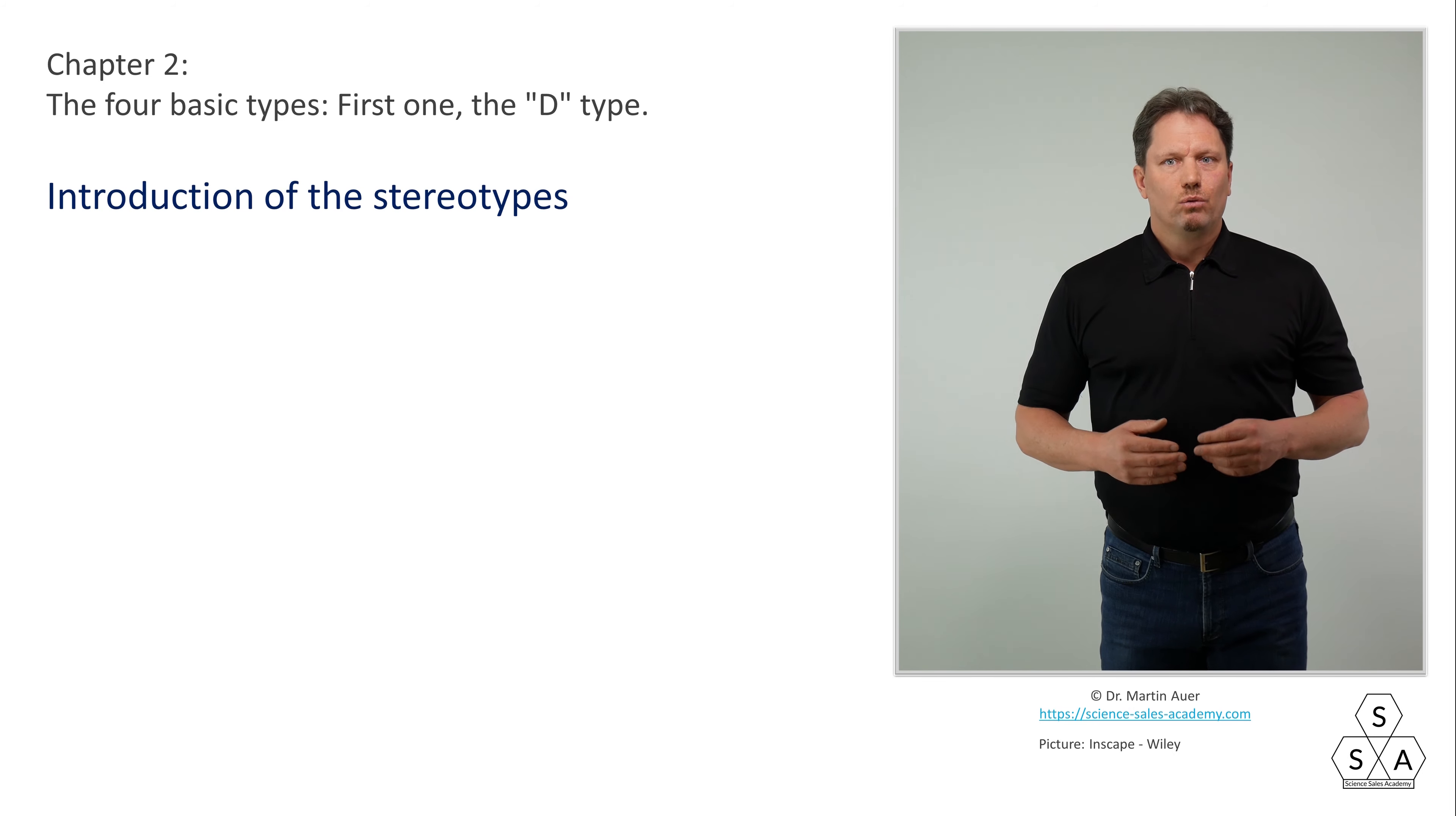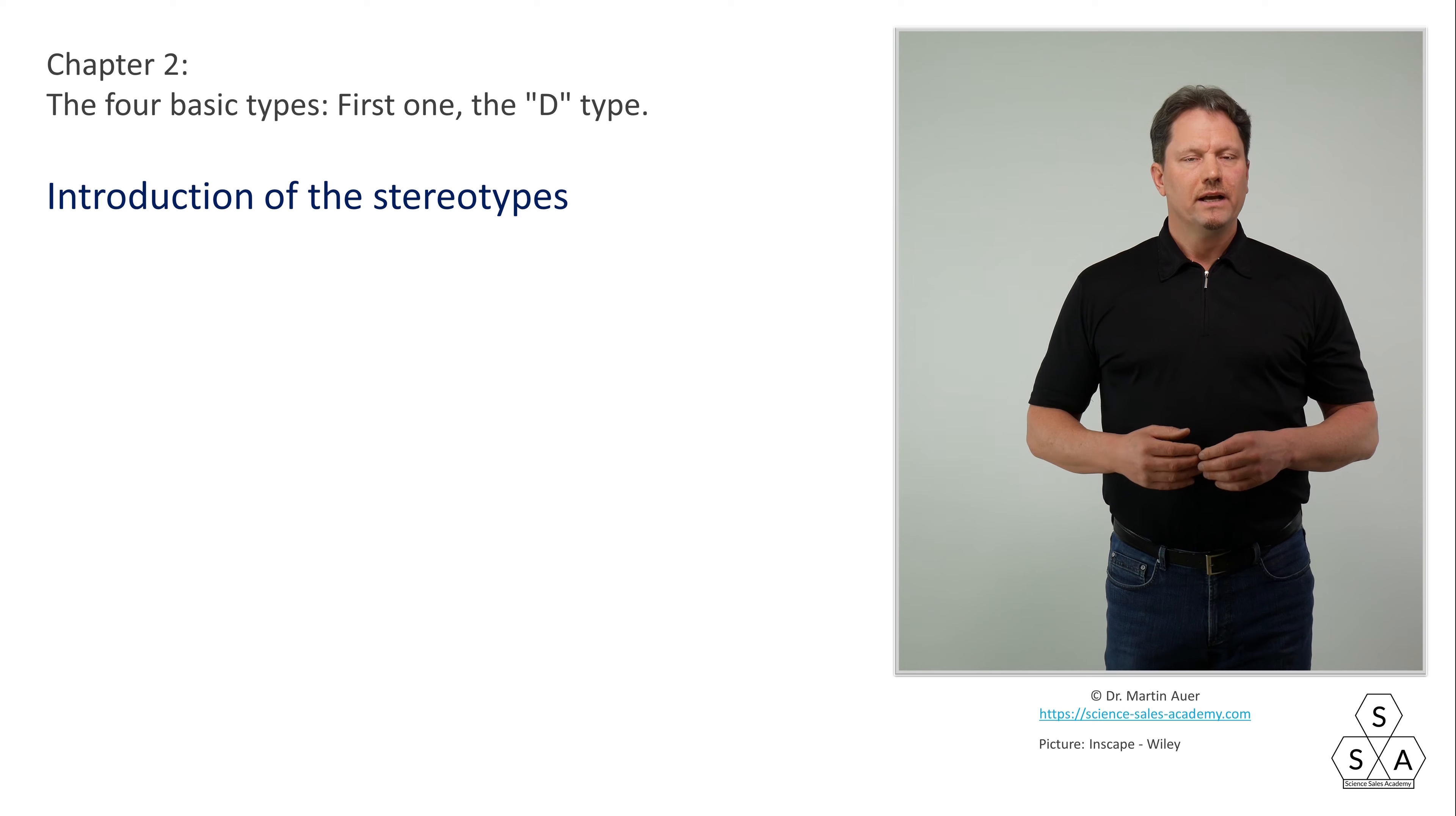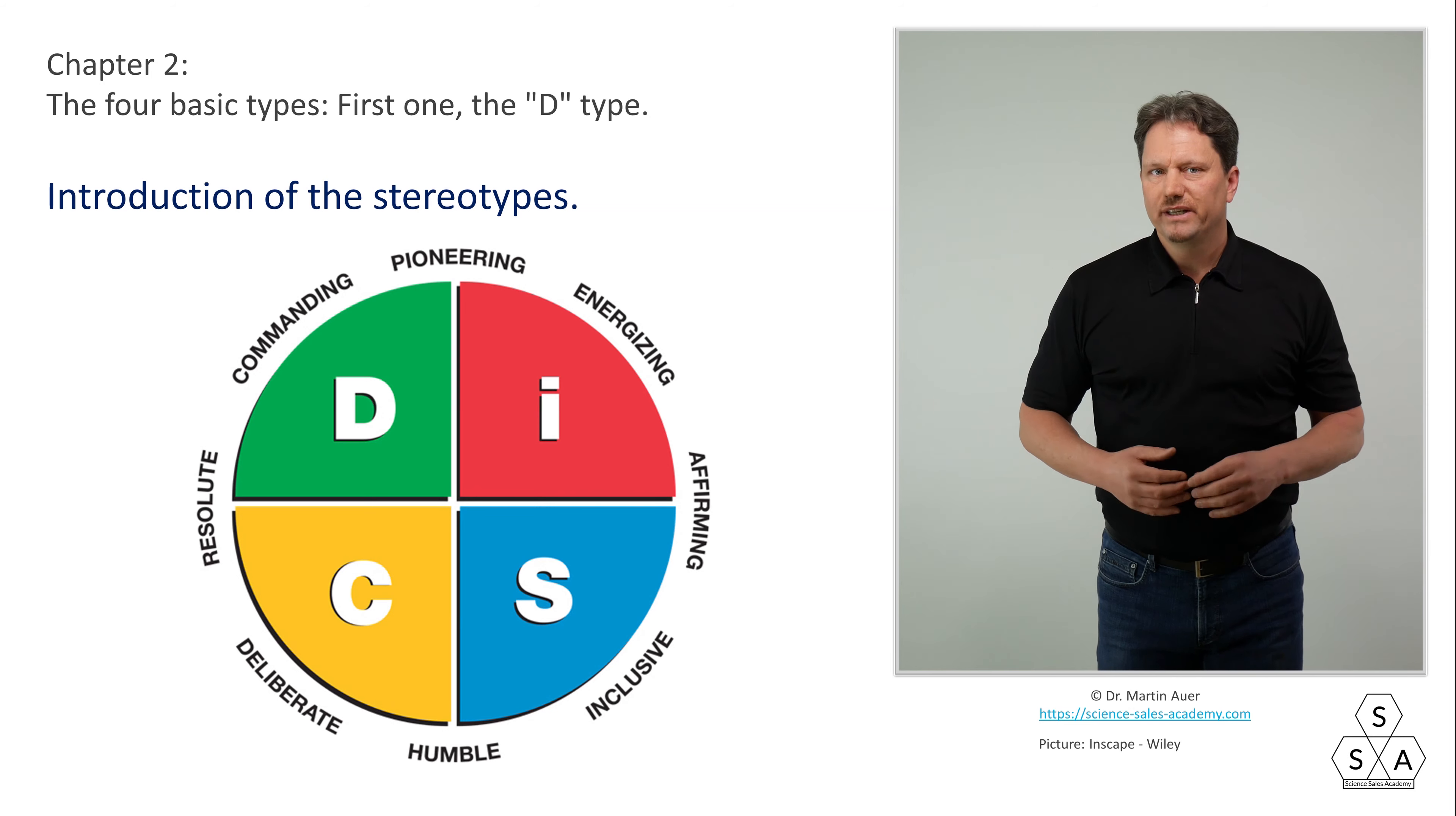In a first step, we introduce the stereotypes of the Wiley DISC model. Knowing that these pure types are very rare in real life, we want to allow ourselves this simplification for our first step. For once we have understood and internalized these, all further steps will be easy and clear. Here we go. The Wiley DISC model divides human behavioral preferences into four quadrants along two axes.